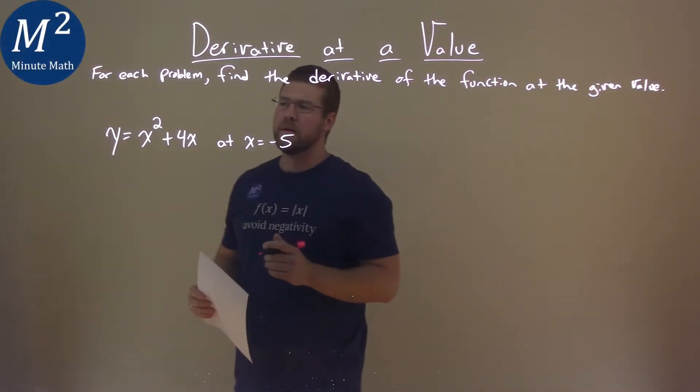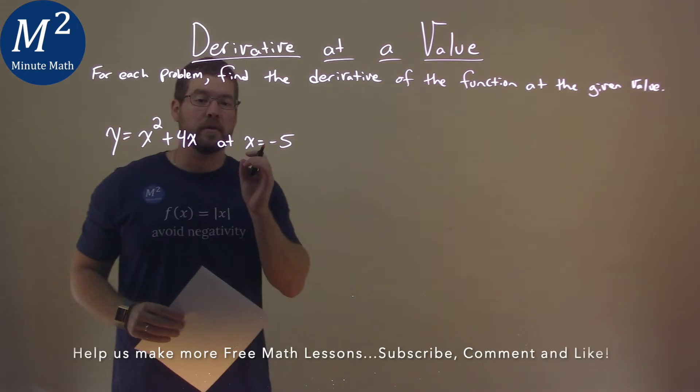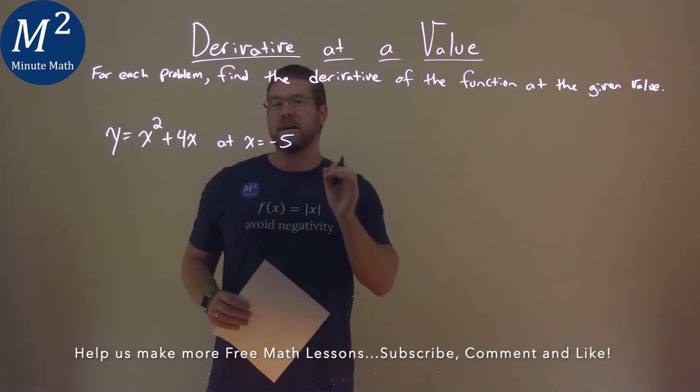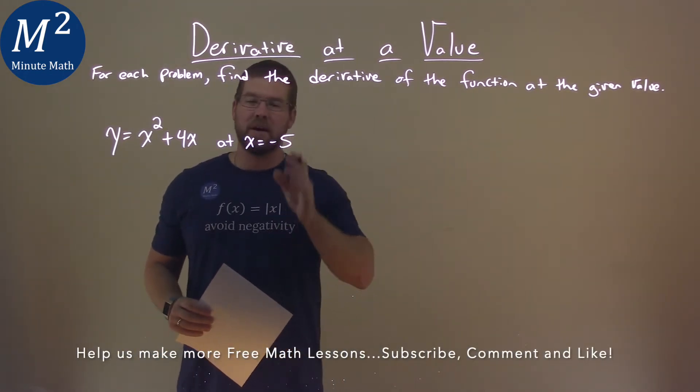We're given this problem: y equals x squared plus 4x at x equals negative 5, and that is where we have to find the derivative.